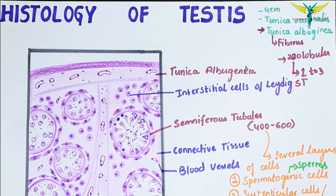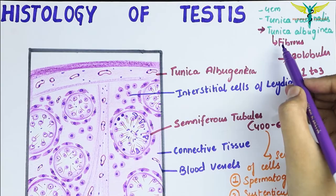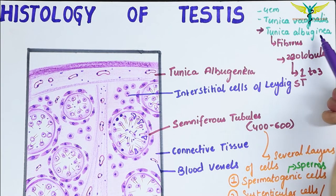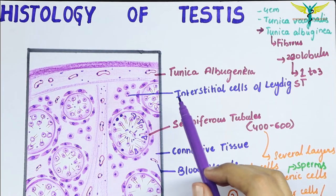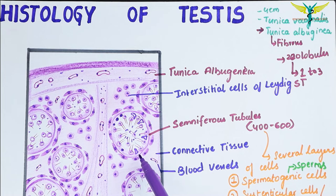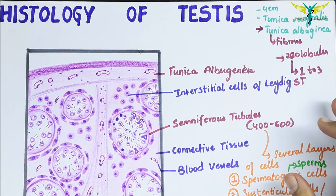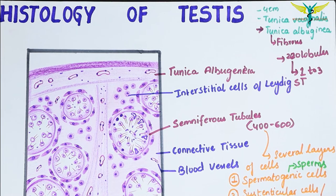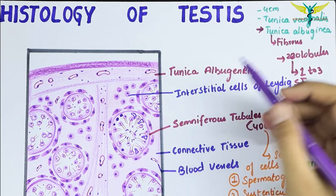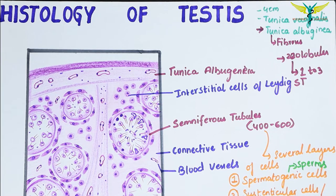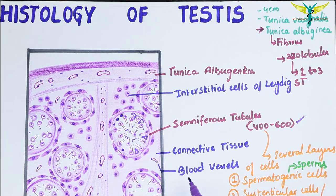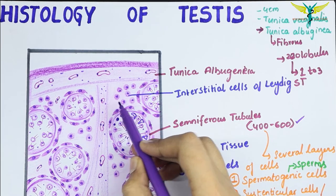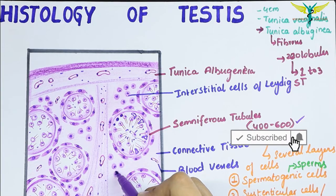To revise the histology of the testis: the testis contains a fibrous membrane called the tunica albuginea, and deep to it a number of seminiferous tubules are present, seen here in cut sections. These seminiferous tubules are highly convoluted structures present in each lobe of the testis. Each testis has about 200 lobules and each lobule has one to three seminiferous tubules, giving a total of 400 to 600. The tubules are separated by connective tissue containing blood vessels and groups of interstitial cells of Leydig.